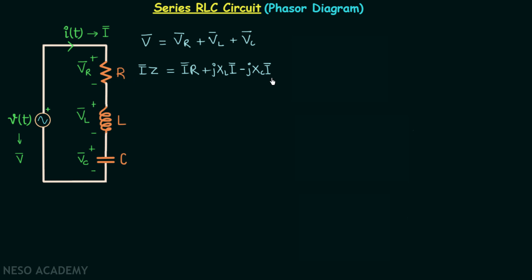When you take I phasor common and cancel it out, you will have impedance Z equal to resistance R plus j times the quantity reactance XL minus reactance XC. In this way we have all the relations to draw the phasor diagram.